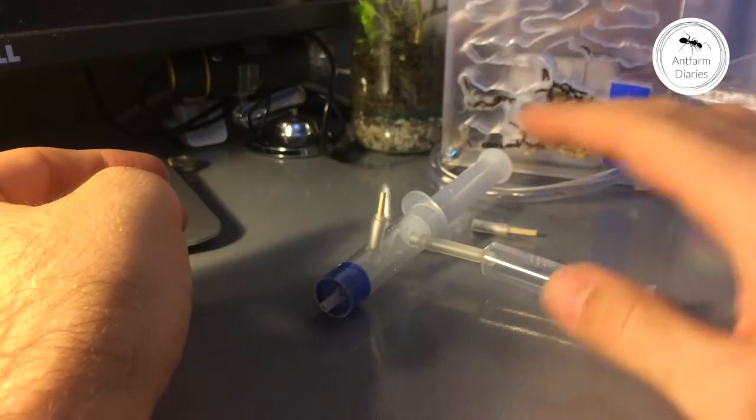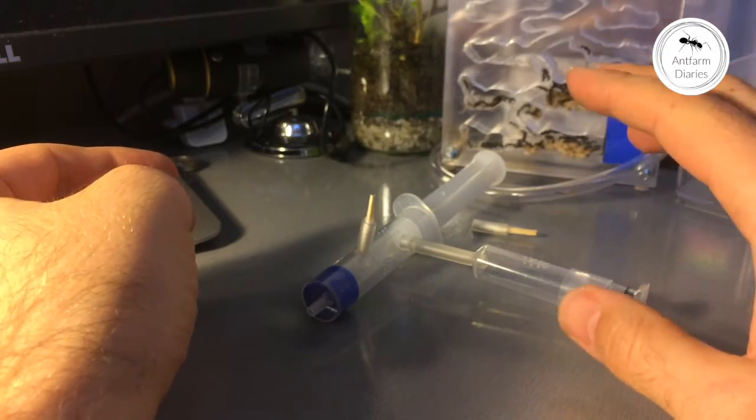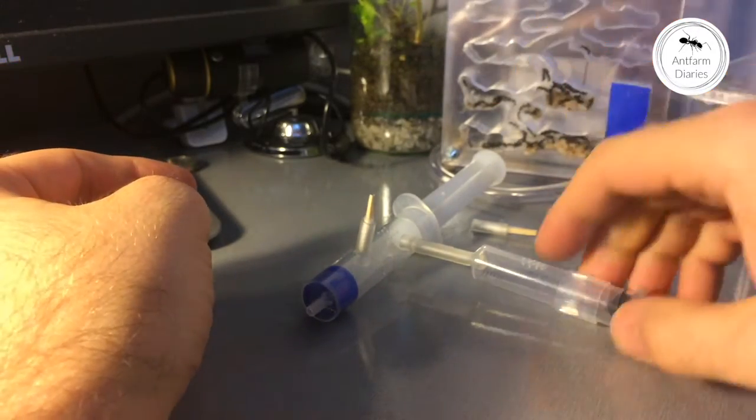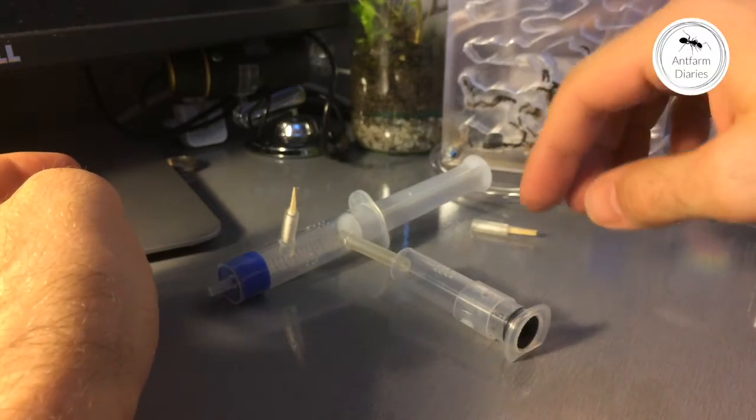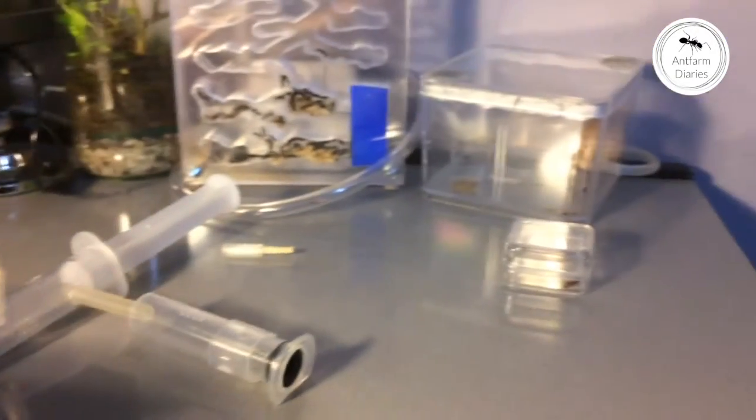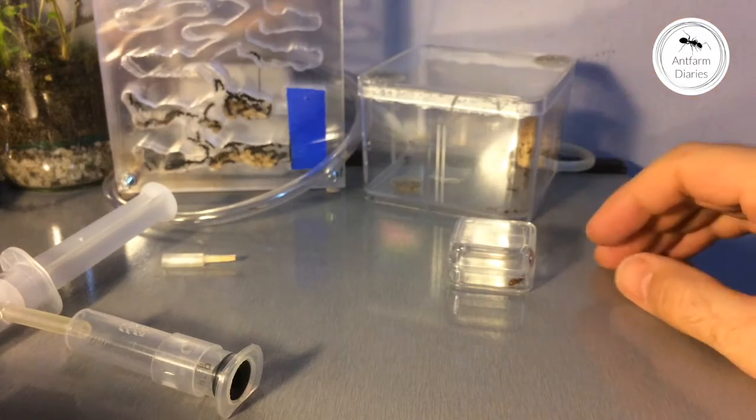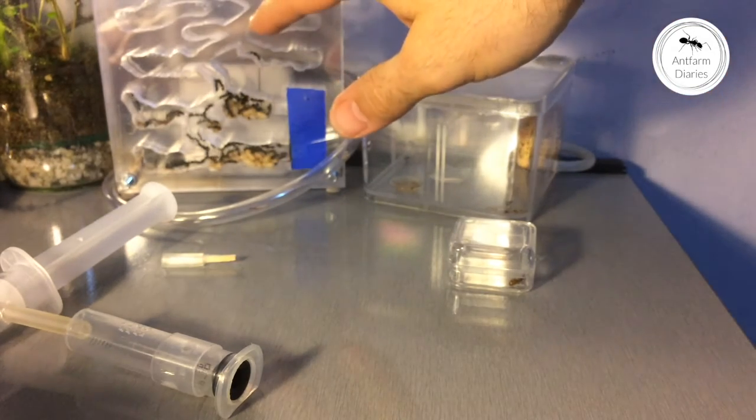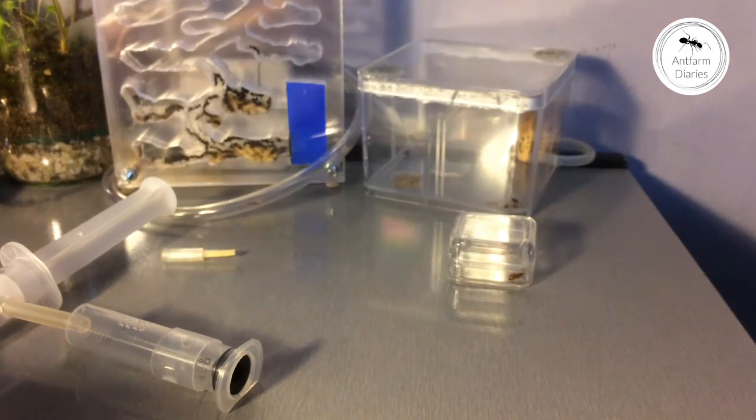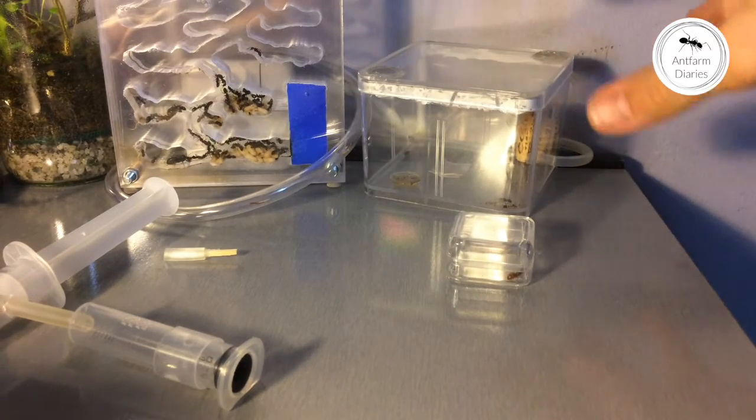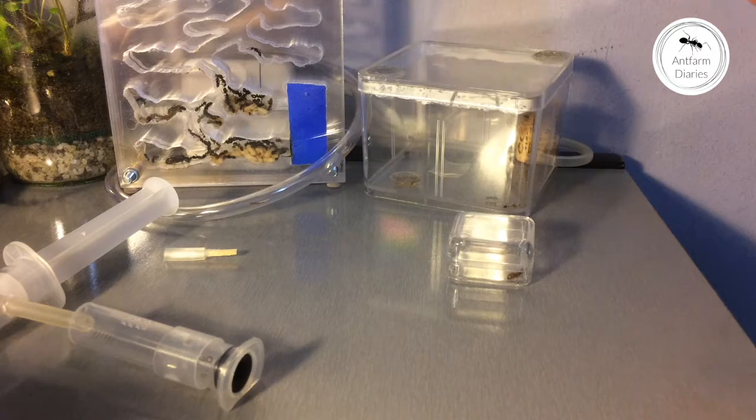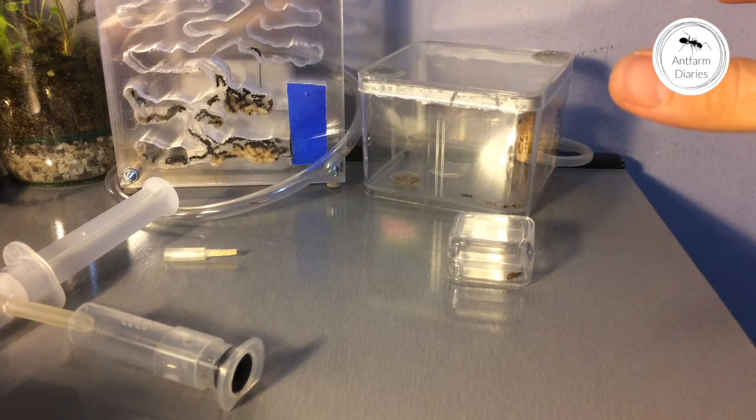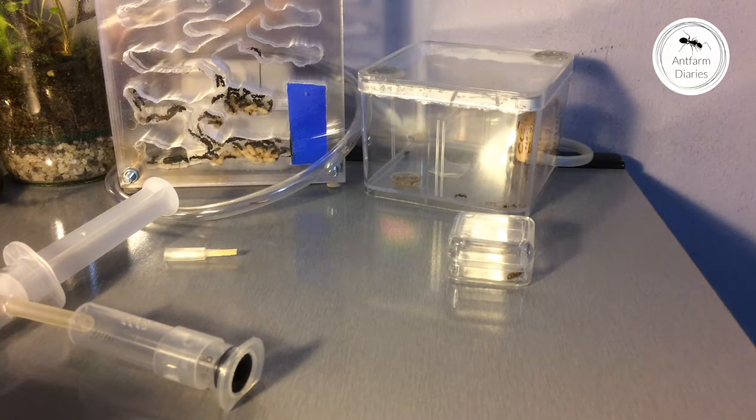And later when the colony is growing I can attach another chamber made of syringe or use this arena. I will attach a bigger arena to this formicarium later, and they will have their own bigger arena until they get like 100 to 200 species in the colony.